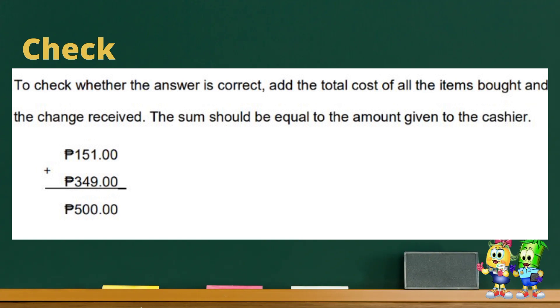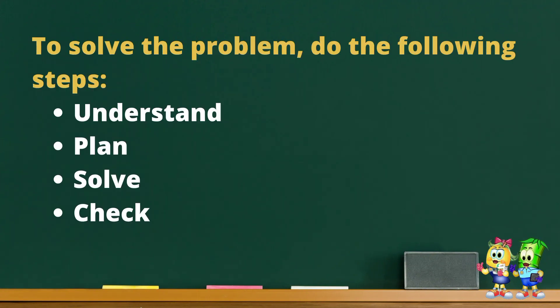To check whether the answer is correct, add the total cost of all the items bought and the change received — the sum should equal the amount given to the cashier. One hundred fifty-one pesos plus three hundred forty-nine pesos is equal to five hundred pesos. Therefore, our answer is correct. Remember, in solving the problem, do the following steps: Understand, Plan, Solve, and Check.